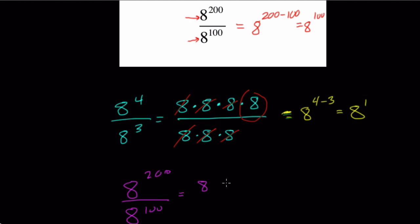So that essentially means we have what? We have 200 8s, right, that we're lining up here. And then 100 8s down here.